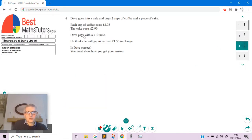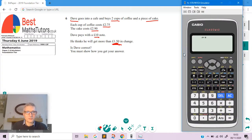Moving on, we've got question six. Dave is going into a cafe buying two cups of coffee and a piece of cake. We're given the price of coffee and the price of cake. We're told that he pays with a £10 note. He's thinking that he's going to get more than £1.50 in change. We've got to find out whether he's right or not.